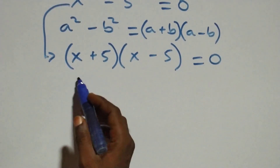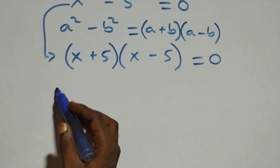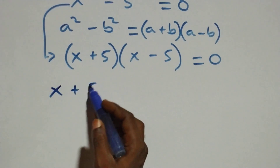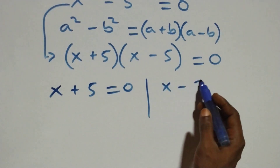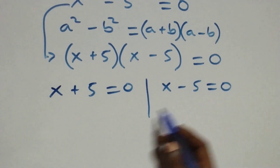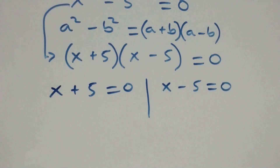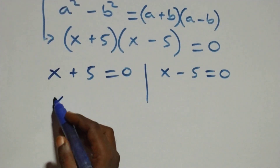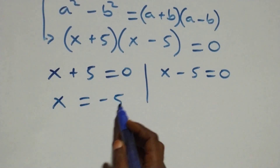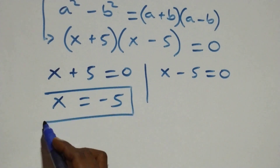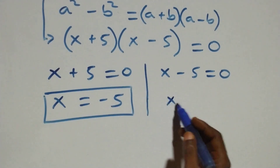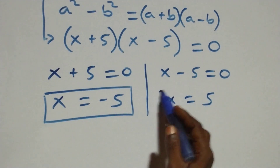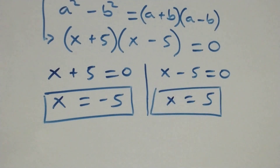We have two cases: x plus 5 equals zero, or x minus 5 equals zero. On one side x equals minus 5, which is a real solution, and on the other side x equals 5, also a real solution. So we have two real solutions here.